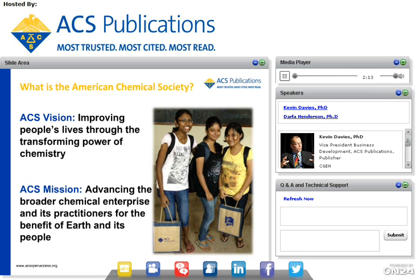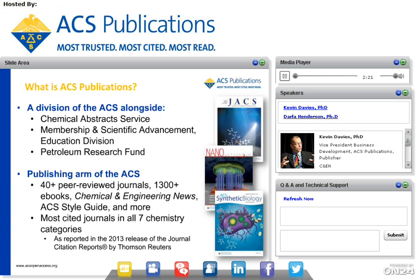This vision and mission influence everything we do at the ACS. ACS Publications is a division of the ACS, alongside Chemical Abstract Service, Membership and Scientific Advancement, Education Division, and Petroleum Research Fund. ACS Publications is the publishing arm of the ACS, publishing more than 40 peer-reviewed journals, more than 1,300 e-books, Chemical and Engineering News, ACS Style Guide, and more. ACS journals are the most cited journals in all seven chemistry categories.